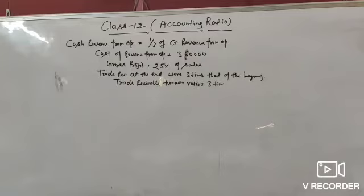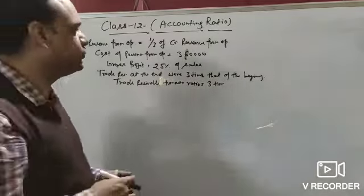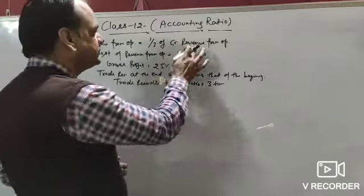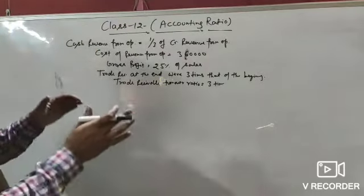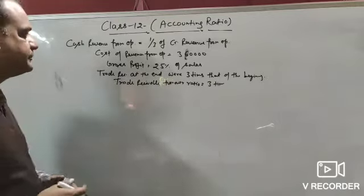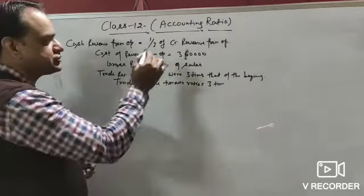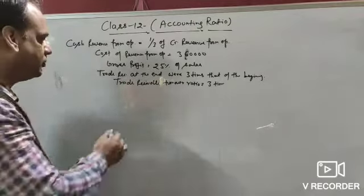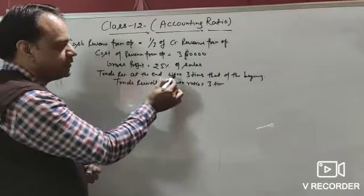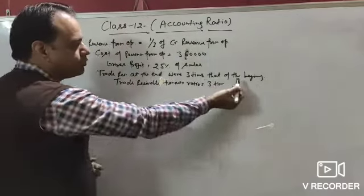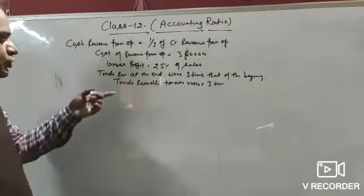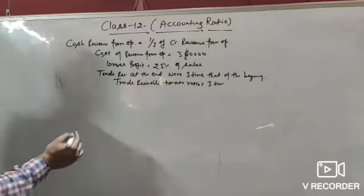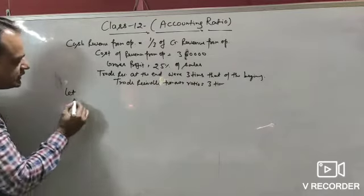Now illustration number 85. In this illustration, cash revenue from operation is 1/3 of credit revenue from operation. Cost of revenue from operation is ₹3,60,000. Gross profit is 25% on sale. Closing trade receivable is 3 times the opening trade receivable. Trade receivable turnover ratio is given as 3 times. First we need to find revenue from operation.